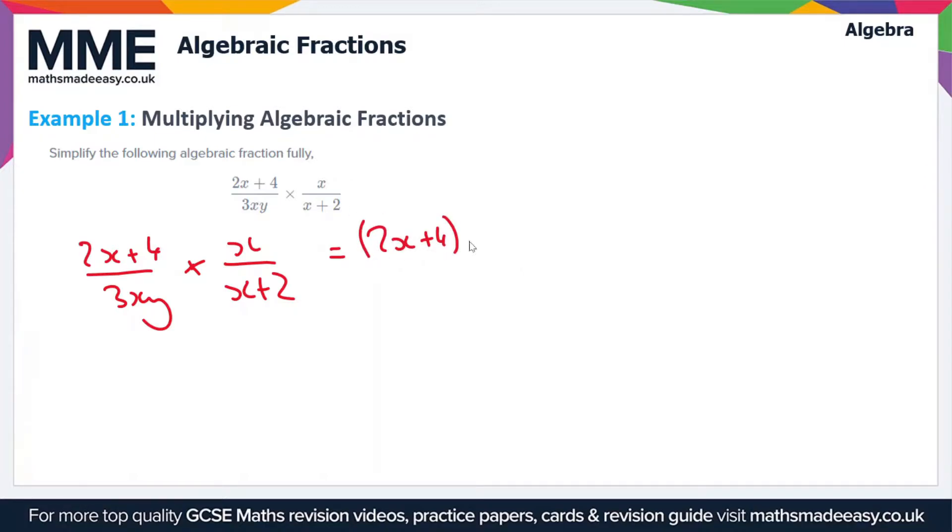First thing we can do is we can cancel the x on the numerator and the denominator because x over x is 1. So we'll cross out these terms and we're left with (2x+4) over 3y times (x+2).